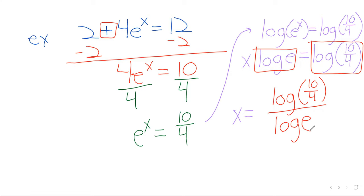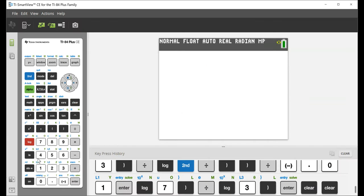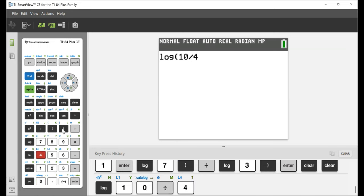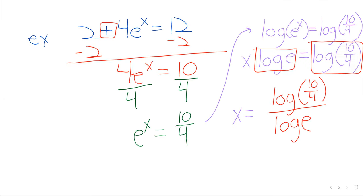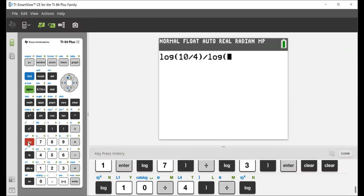And an answer like that, of course, completely worthless in practice. You can't tell policymakers, here's what the population will be in the log of 10 fourths over the log of e years. I'm a big proponent of getting easy to understand decimal solutions. So that's the log of 10 fourths over the log of,